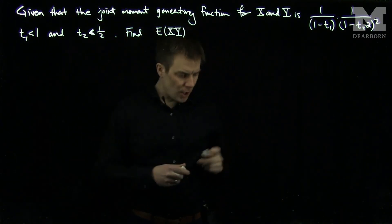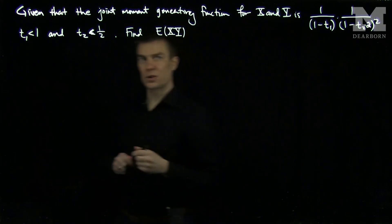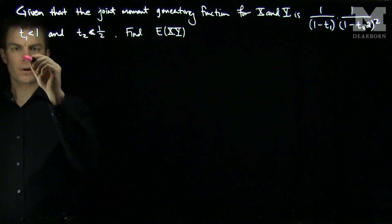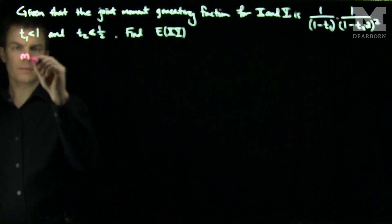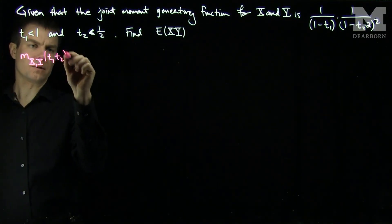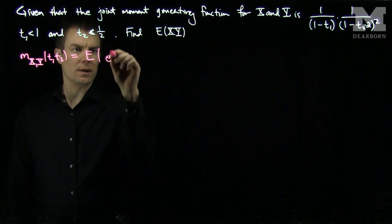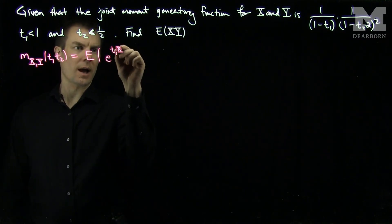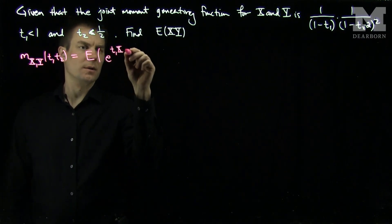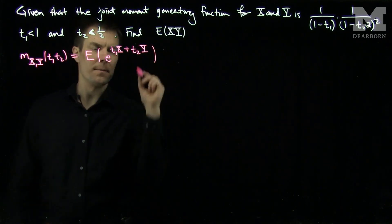We recall what the joint moment generating function is. The joint moment generating function M of x and y, t1, t2, is the expected value of e to the t1*x plus t2*y.